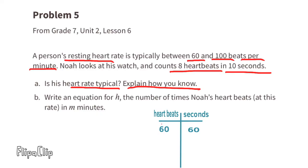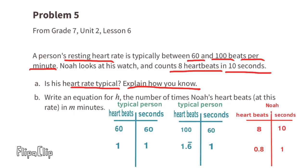The information tells us that a typical heart rate is between 60 beats per minute (or 60 beats per 60 seconds) and 100 beats per minute (or 100 beats per 60 seconds). At the low end of the typical resting heart rate, there's one beat for every one second, and at the high end there's 1.6 repeating beats for every second. The information tells us that Noah counts 8 heartbeats in 10 seconds—that's 0.8 of a heartbeat every one second. That means Noah's resting heart rate is lower than the typical range for a resting heart rate.